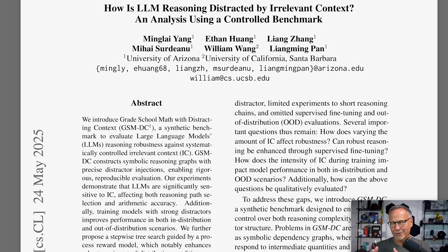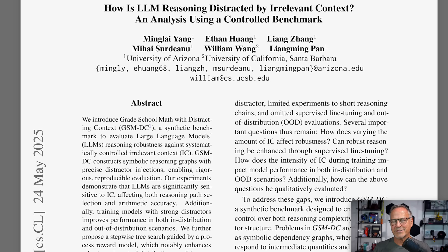Large language models, because they've learned from human text and now video and audio, are really, really good at story-based compression as well. But the consequence is they can also get distracted by irrelevant information. If you put junk information into a question, the model can get distracted by it and spit out the wrong answer, whereas without that distracting information it would reason through to the correct answer.